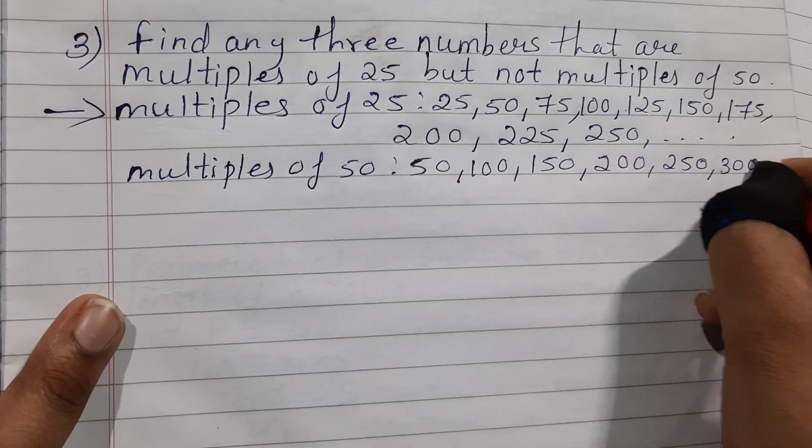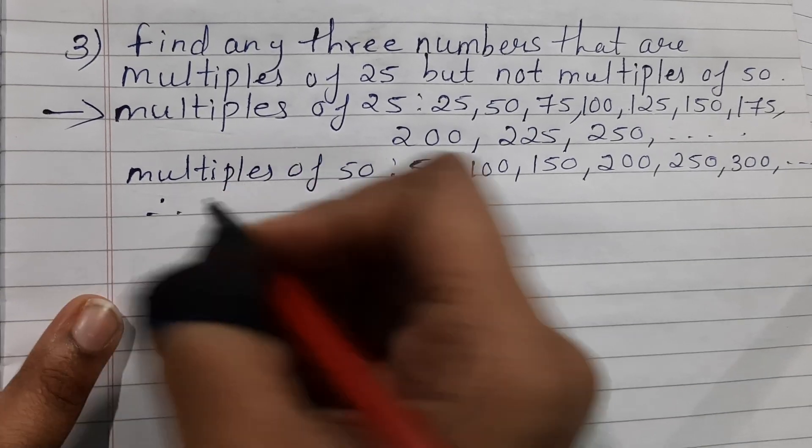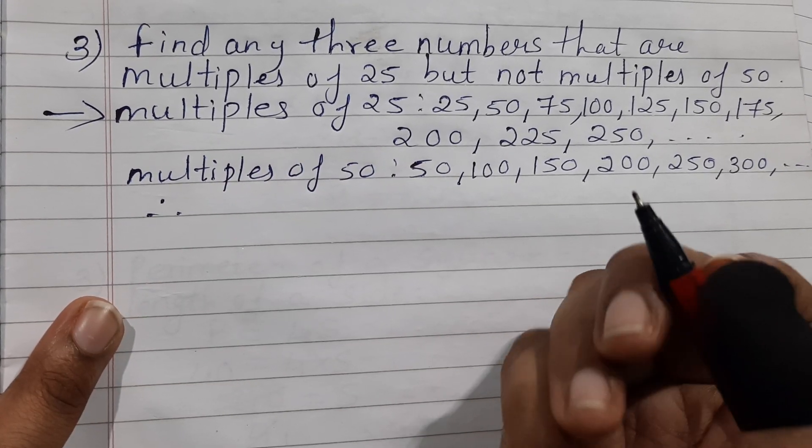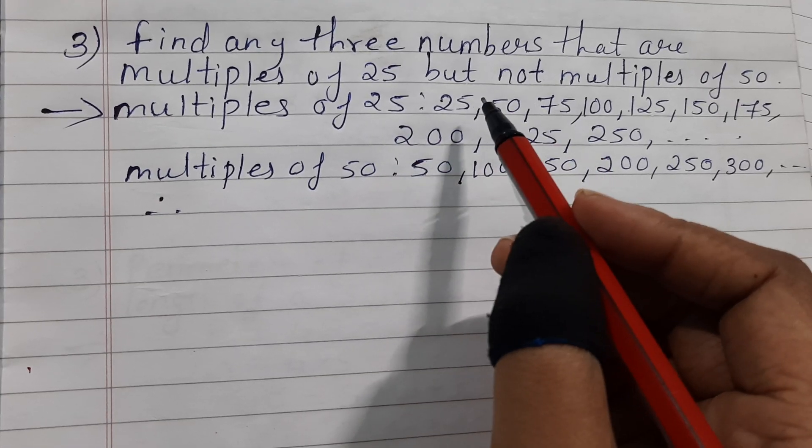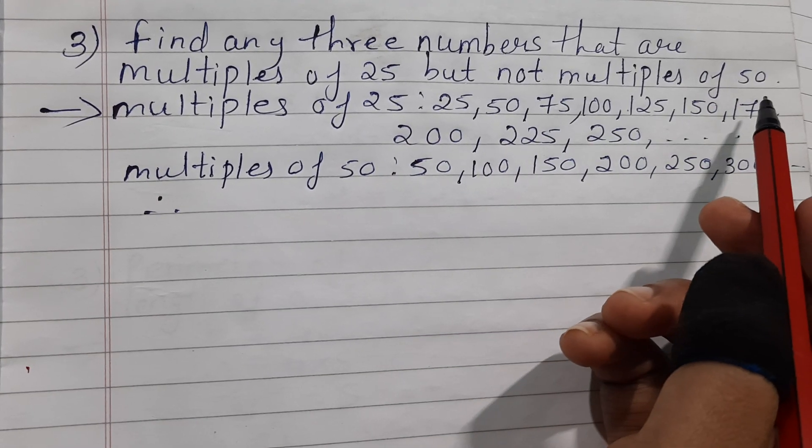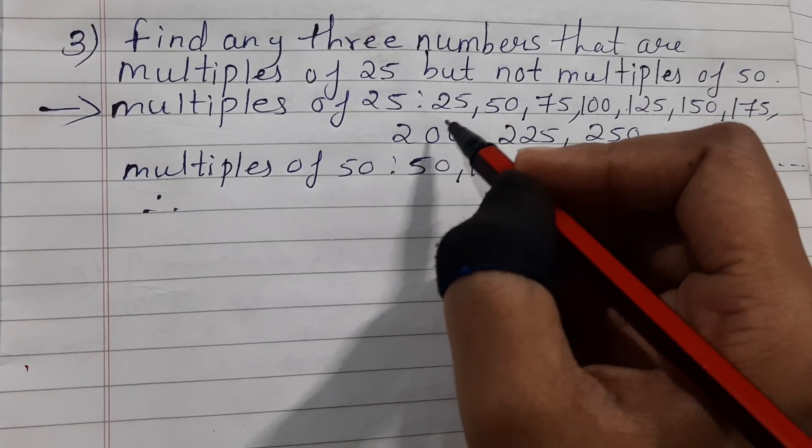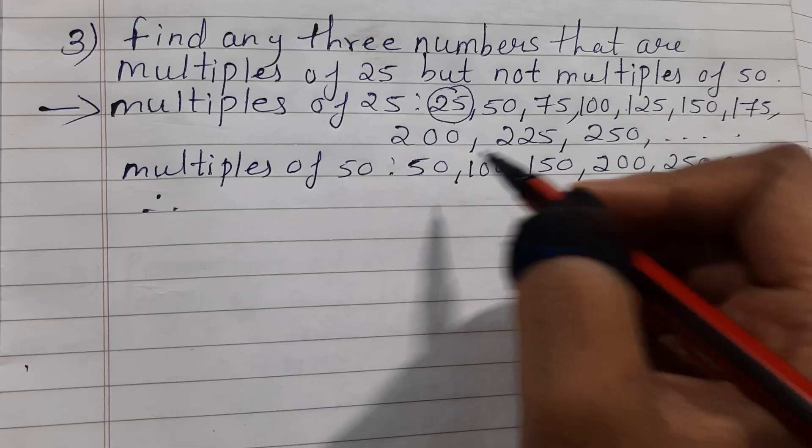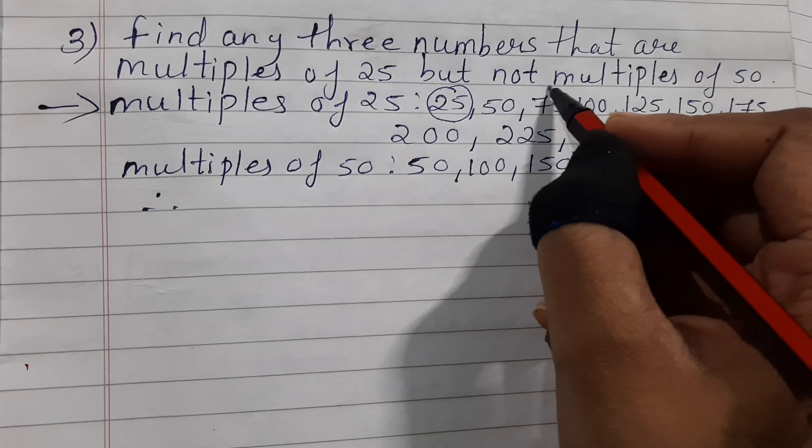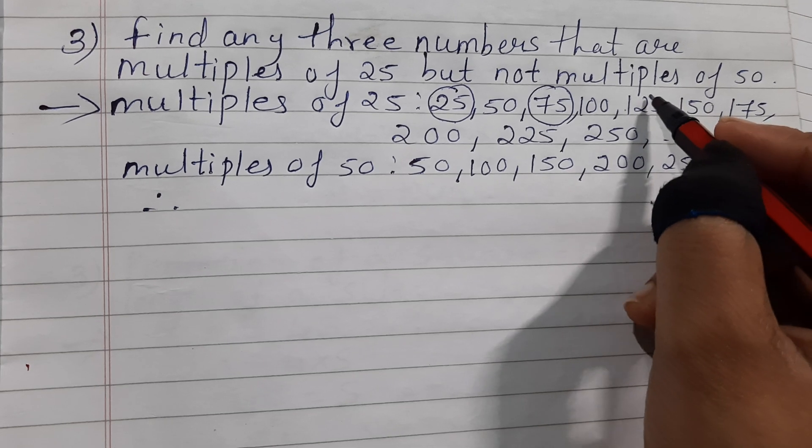So to find any 3 numbers that are multiples of 25 but not multiples of 50, you can see that 25 is not in the table of 50. Even 75 is not in the table of 50, and 125.